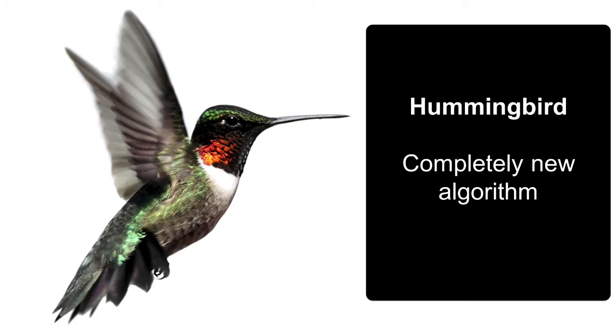Hummingbird is new — it's a completely new search algorithm. It's designed to work with more natural voice search, because of the rise of Siri on the iPhone. Instead of people typing 'Plumber Melbourne,' they might speak to Siri and say 'I need a plumber in the eastern suburbs of Melbourne.' Hummingbird makes search work better for natural speech. Provided you're just writing naturally and not trying to game the search engines, you'll be fine. It's not worth trying to game Google.